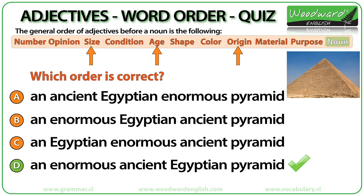An enormous ancient Egyptian pyramid. Enormous refers to size, ancient refers to age, and Egyptian is the origin. The order is: size, then age, then origin.